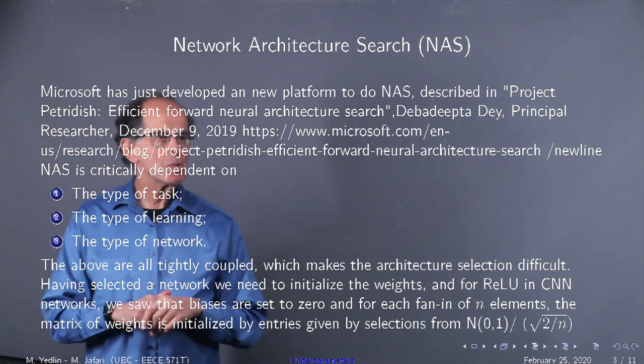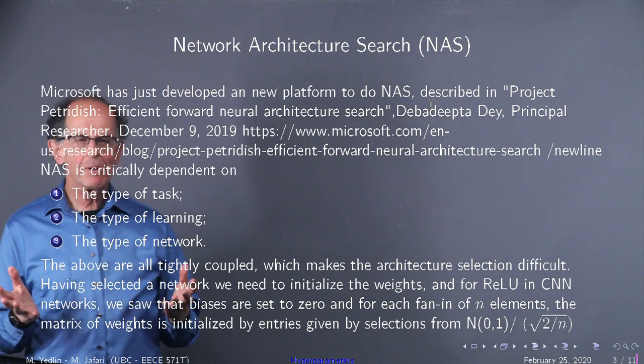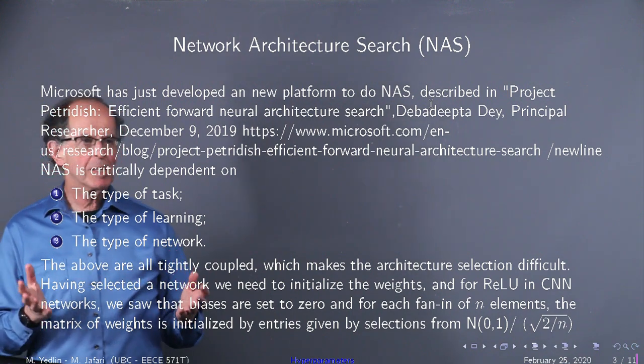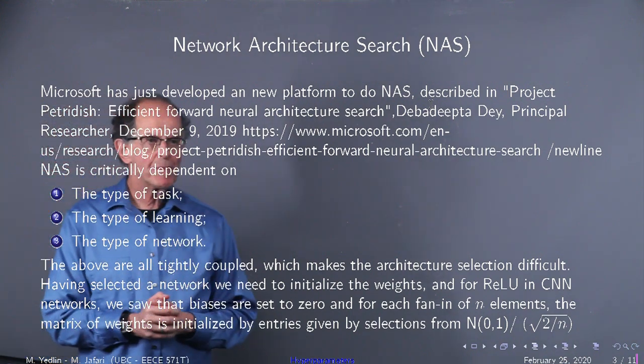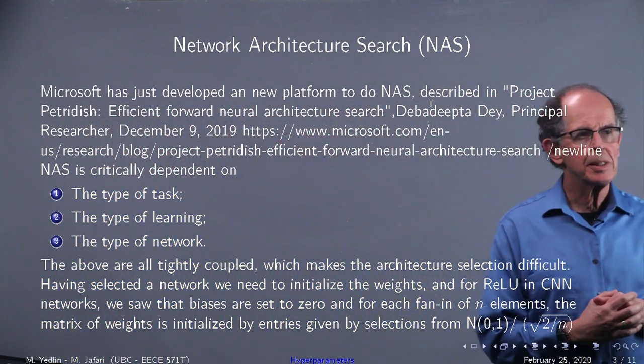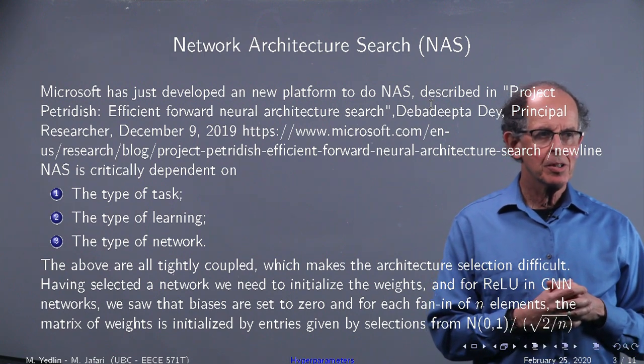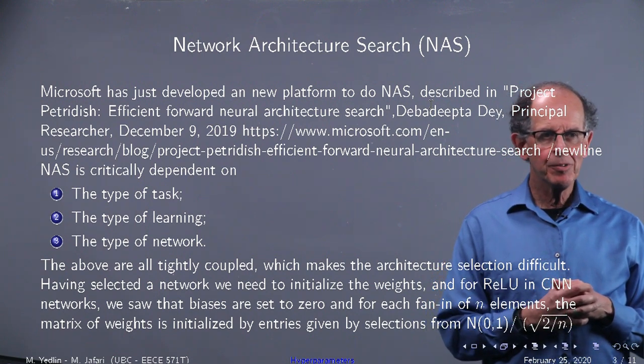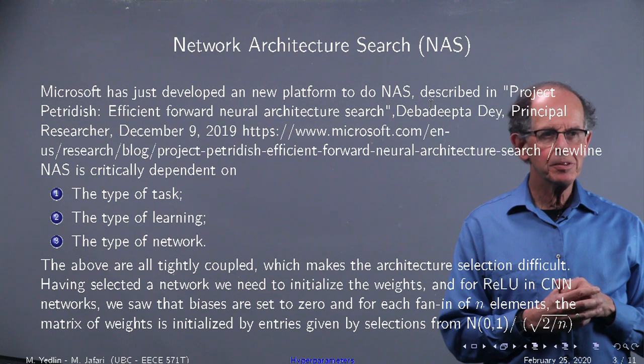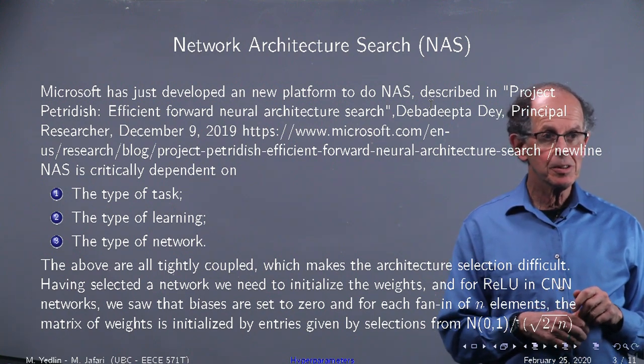Let's look at the first one, network architecture search. One of the main problems is building an architecture and that used to be and still is very time consuming. So Microsoft has developed this new platform called Petri dish. It's rather new, there's a reference there, December 9th, 2019.